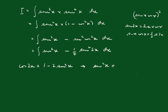Sine squared x equals 1 half of 1 minus cos 2x, and of course...